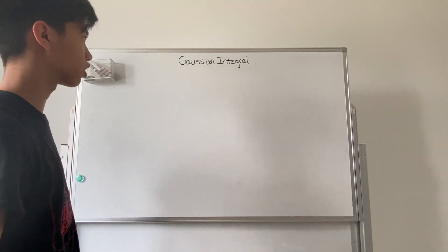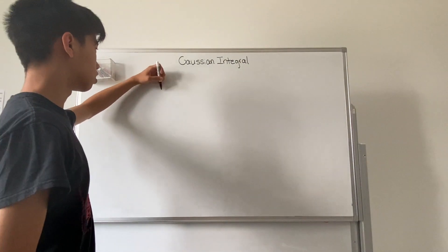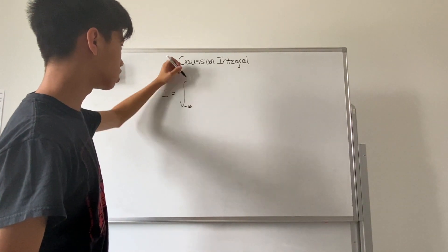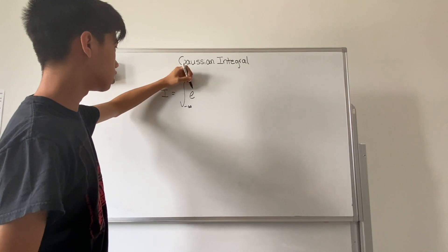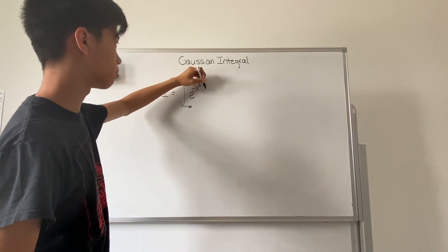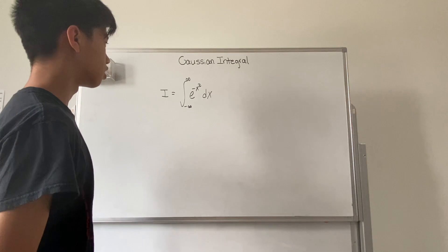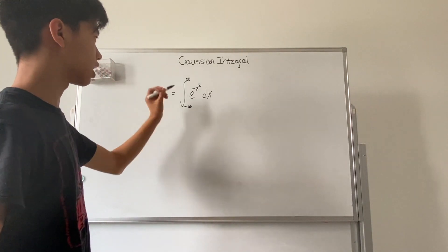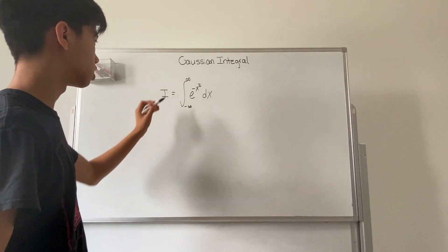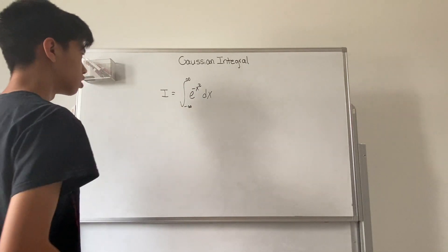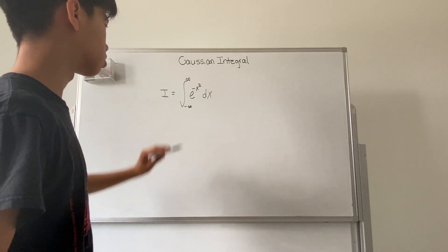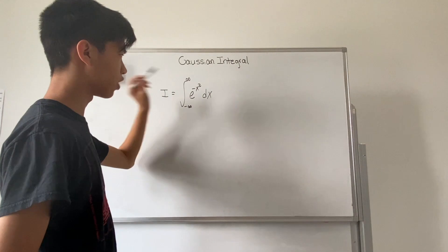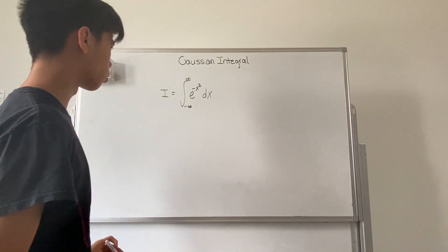Hello YouTube. Today we will be evaluating the Gaussian integral. The Gaussian integral is the integral from negative infinity to infinity of e to the negative x squared power dx. At first glance this seems impossible because there's no antiderivative of this that we can take — there's no elementary function that you can have to find the antiderivative of this. So what are we supposed to do?